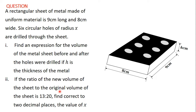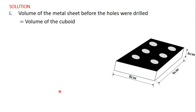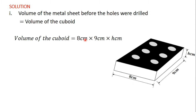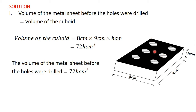Before the holes were drilled, the volume of the metal sheet is equal to the volume of the cuboid, since there are no holes. The volume of this cuboid is 8 centimeters times 9 centimeters times h centimeters, since volume equals length times breadth times height. That gives us 72h centimeters cubed. So the volume of the metal sheet before the holes were drilled is 72h cm³.